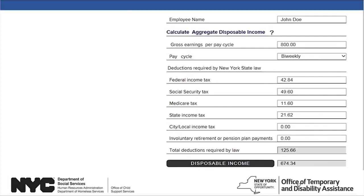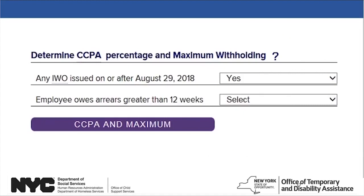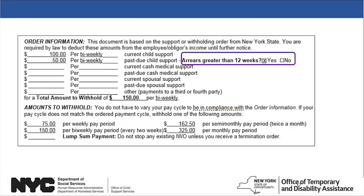The second part of the Income Withholding Calculator concerns the maximum amount that can be withheld from your employee's pay for support obligations. The Consumer Credit Protection Act is the federal law that limits the amounts of withholding. To determine the withholding limitations, select Yes or No to indicate whether the date at the top of page 1 of the Income Withholding Order is on or after August 29, 2018, and whether there are more than 12 weeks of arrears. You can find this information toward the bottom of page 1 of the Income Withholding Order.